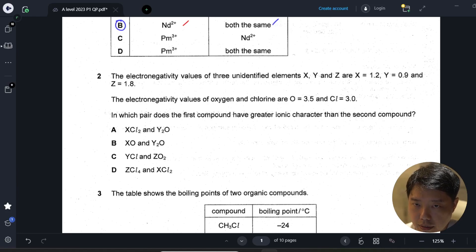Now let's go on to look at question two. The electronegativity values of three unidentified elements X, Y, and Z are 1.2 for X, 0.9 for Y, and 1.8 for Z. Then for oxygen and chlorine is 3.5 and 3.0. In which pair does the first compound have a greater ionic character than the second compound?